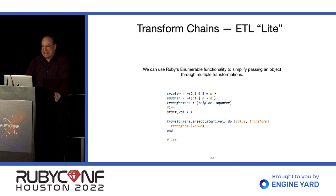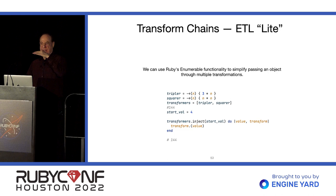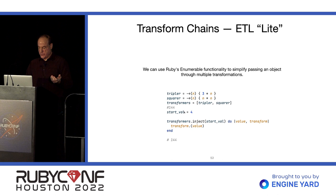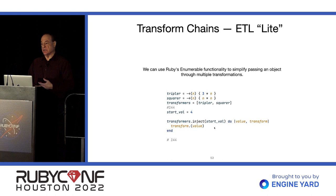Transform chains — ETL light. Usually when we work with enumerables we take a list of values and iterate over them with the same behavior. Here I'm talking about taking a list of behaviors and iterating over them with a single value in sequence. We have a tripler Lambda and a squarer Lambda in an array, with a starting value of four. We call inject with that starting value and apply each behavior in succession, accumulating a final result. I'm not sure when this would be most useful, but it's interesting that it can be done.